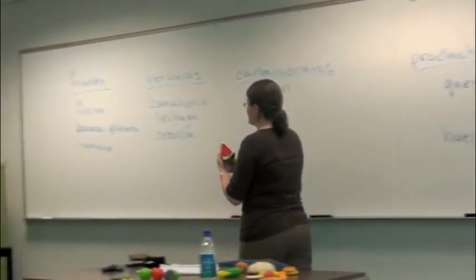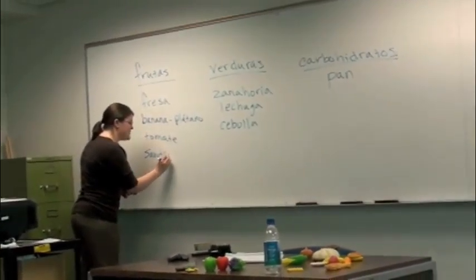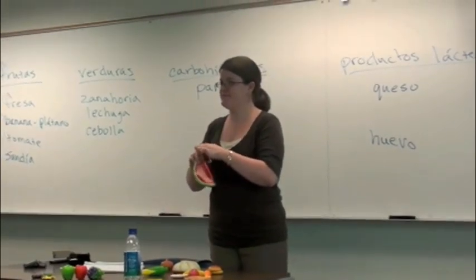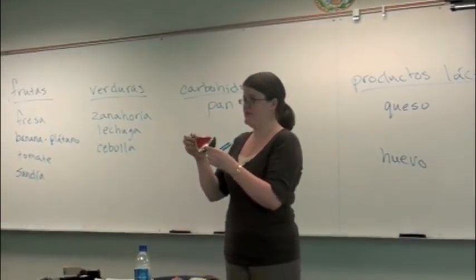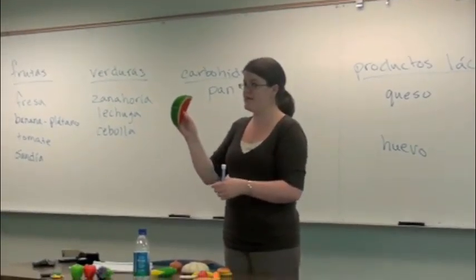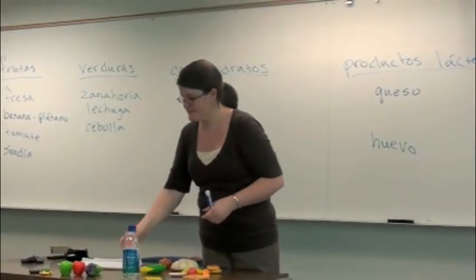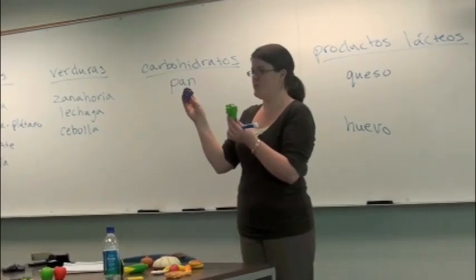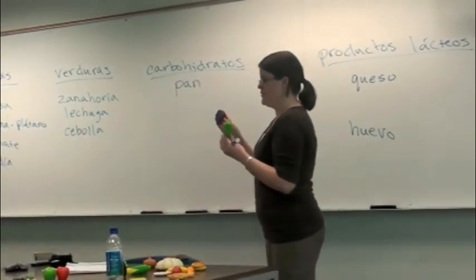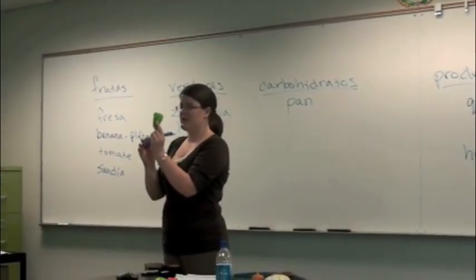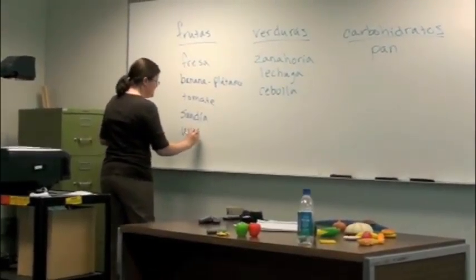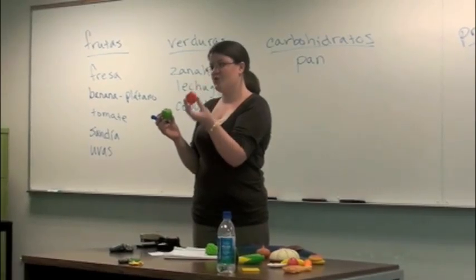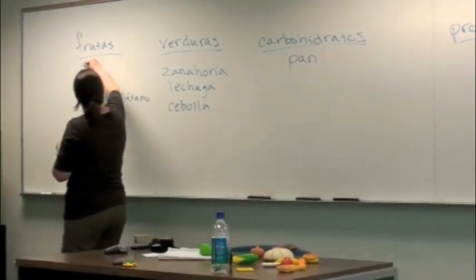Esta fruta es una sandía — es mi fruta favorita, me encanta la sandía. Es un melón. ¿Y de qué color es la sandía? Adentro es roja, por fuera es verde y tiene típicamente semillas negras. Aquí tenemos otra fruta, pero tenemos dos opciones: uvas moradas y uvas verdes. Hay diferentes tipos de uvas, diferentes colores. También de la manzana: tenemos aquí una manzana roja y una manzana verde. También son frutas.